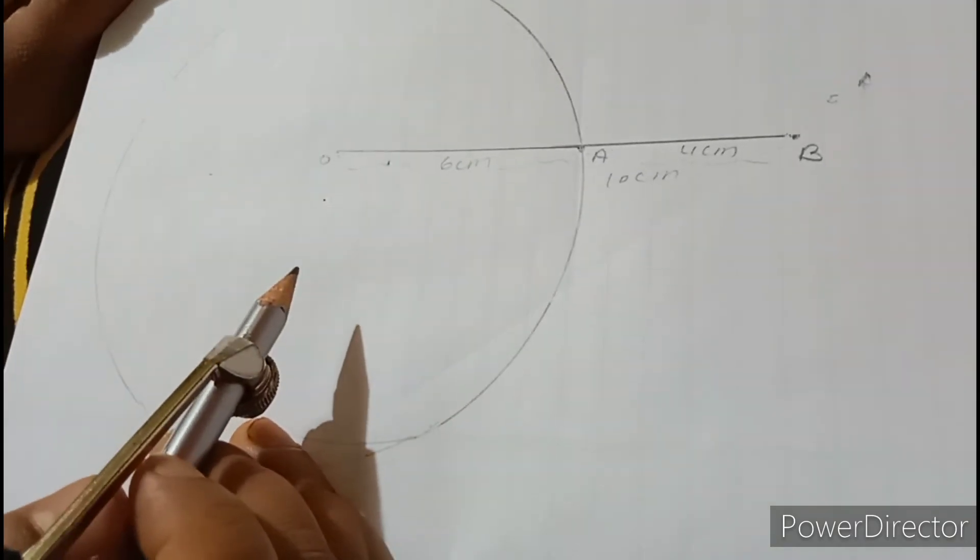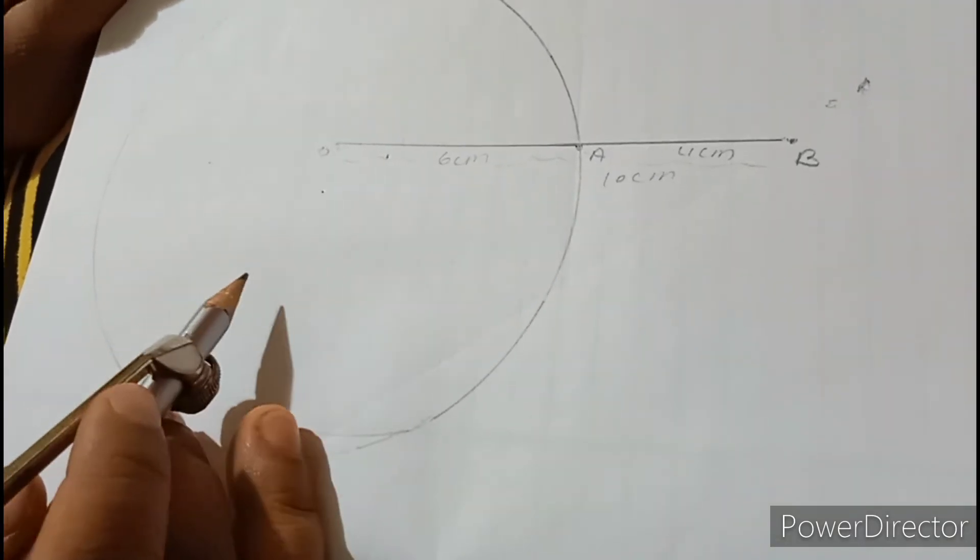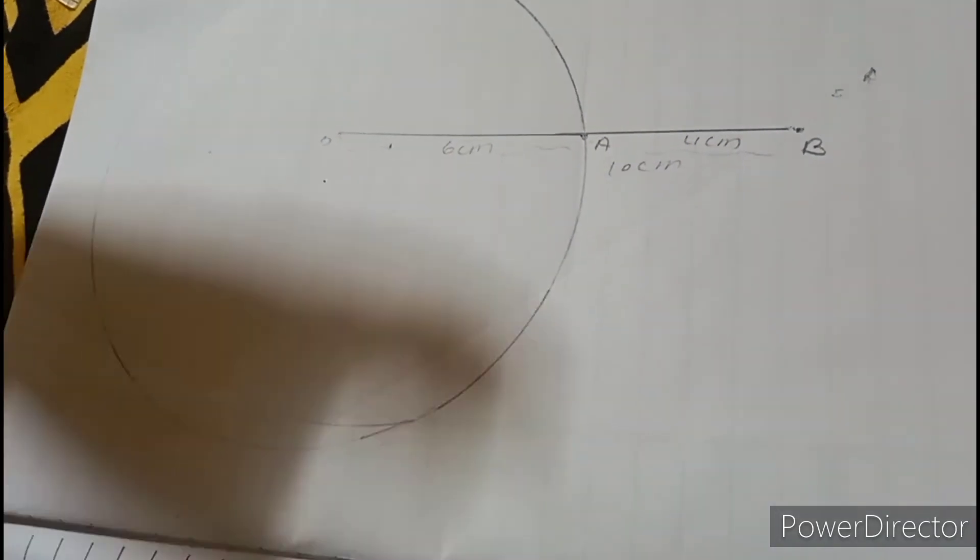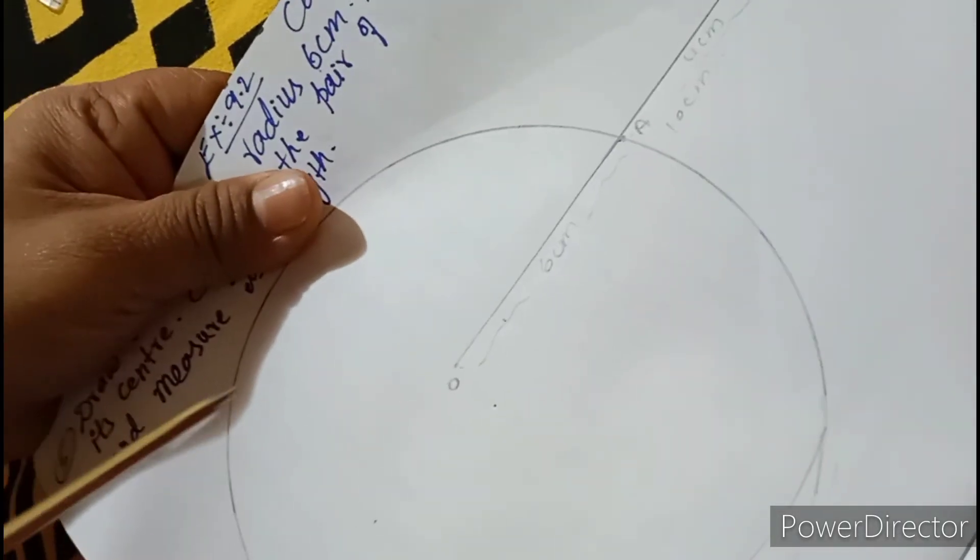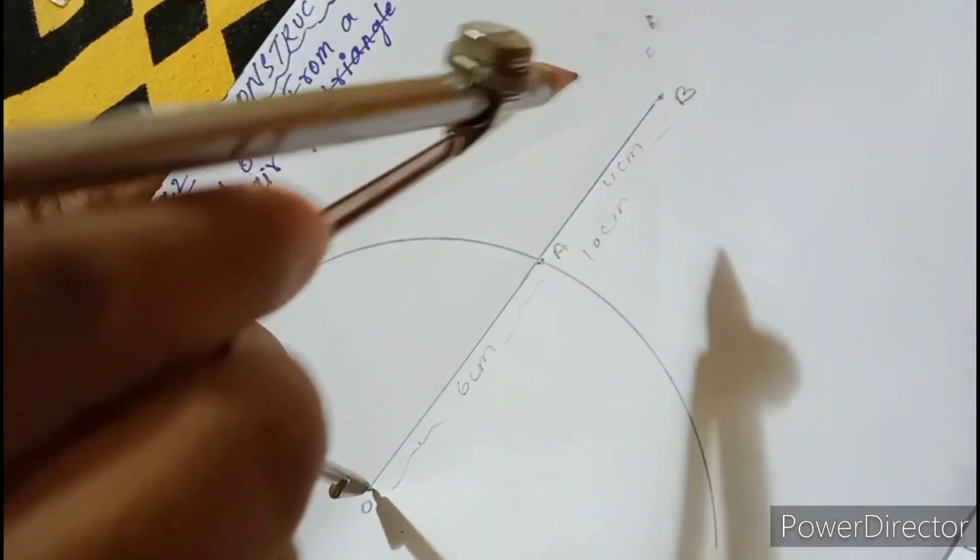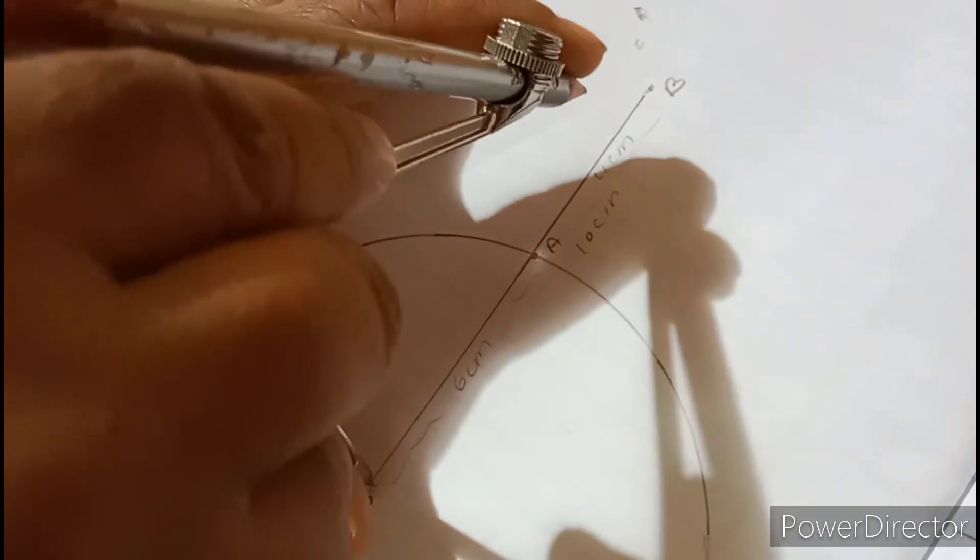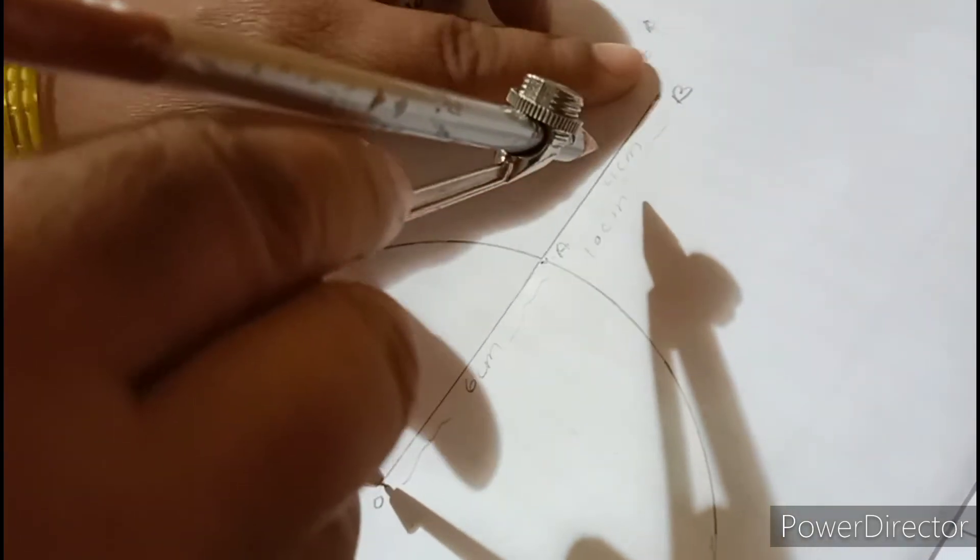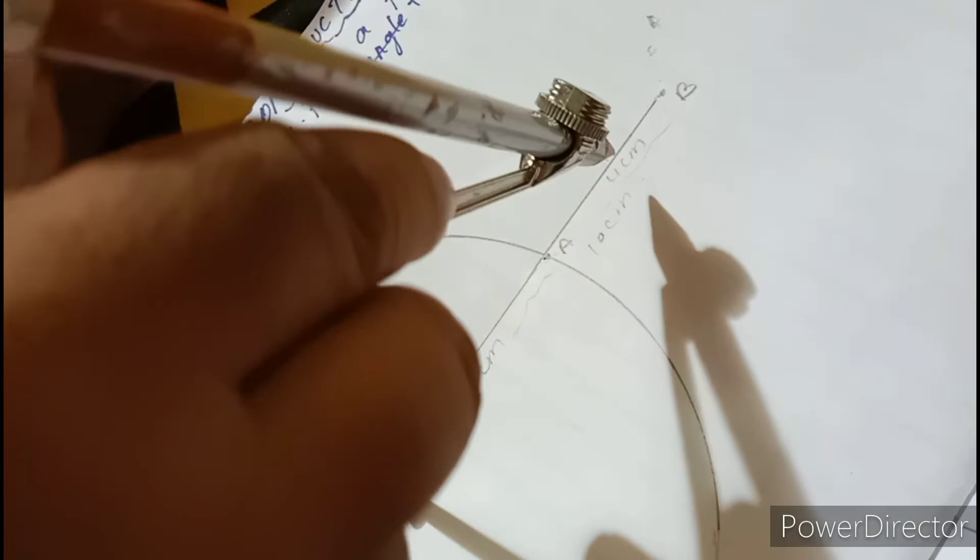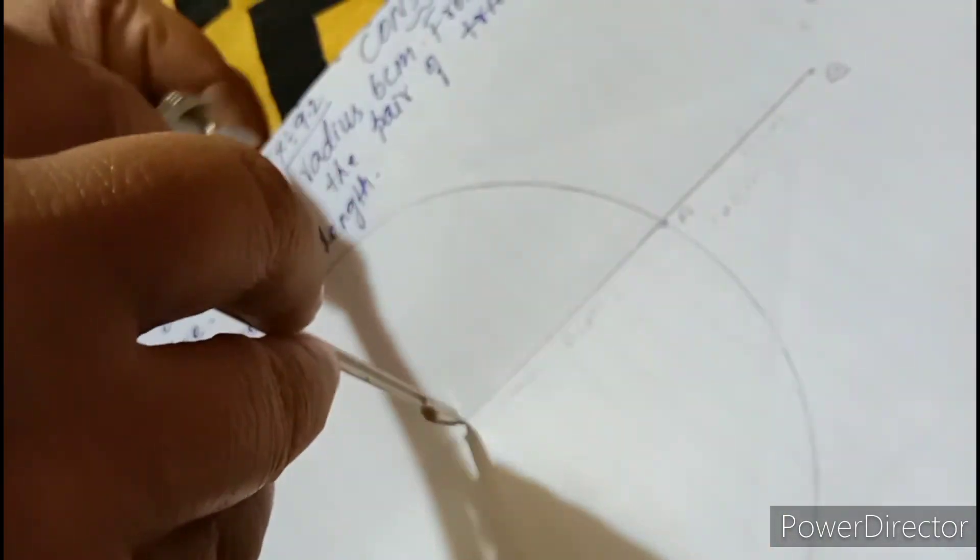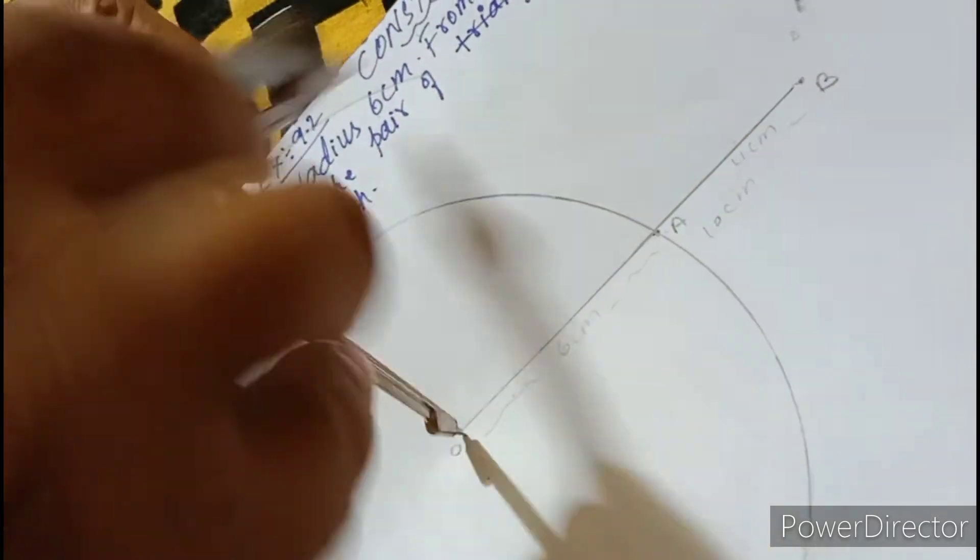Now, we are drawing a perpendicular bisector. Perpendicular bisector means it should be more than half. So, check it once. I am turning book like this. From O to nearest to B. From O nearest to B. You can take alphabet as A, P, Q or any alphabet. See? More than half. Now, you have to draw one arc above and one arc below.